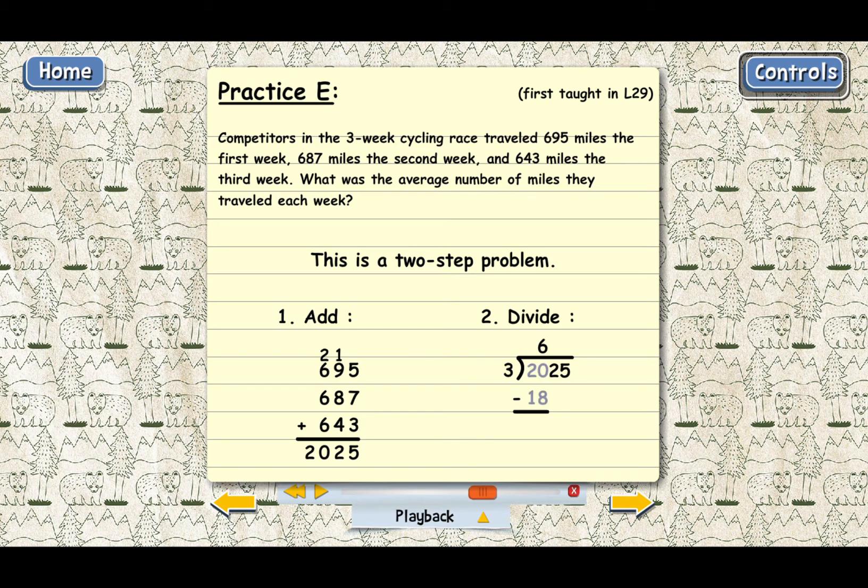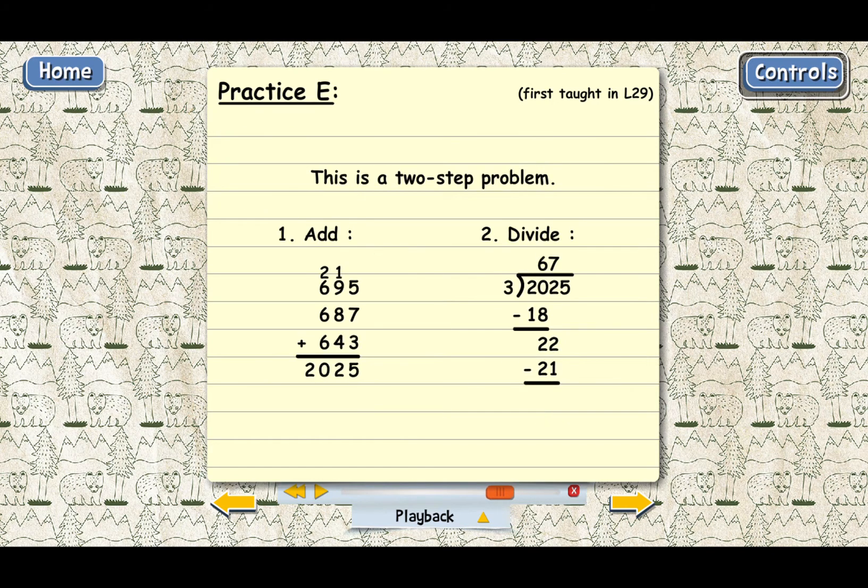and 20 minus 18 is 2. When you bring down the next digit, the 2 becomes 22, and 3 will go into 22 seven times. Put a 7 on top, then multiply 7 times 3, that's 21, and 22 minus 21 is 1.